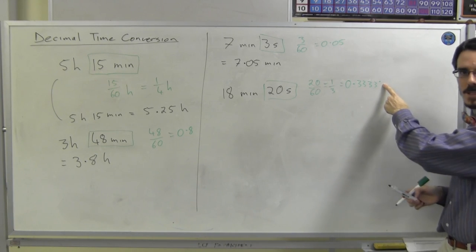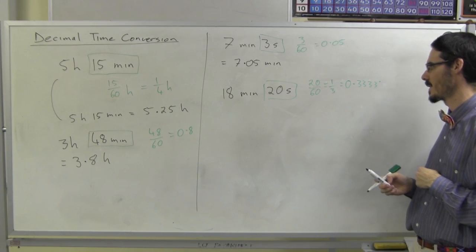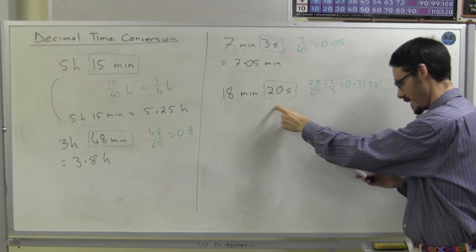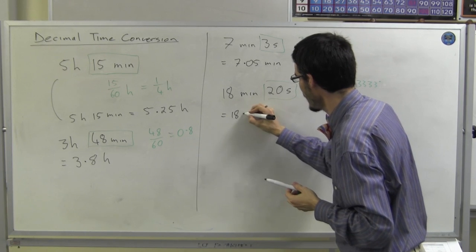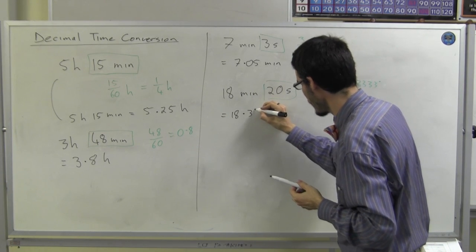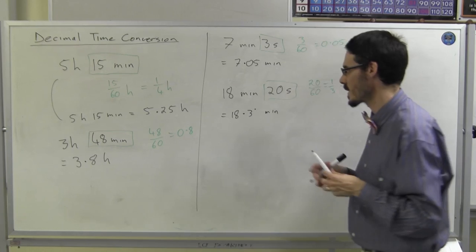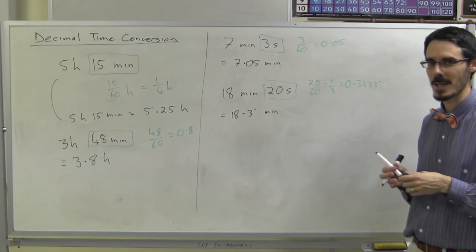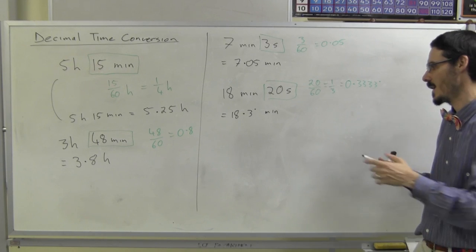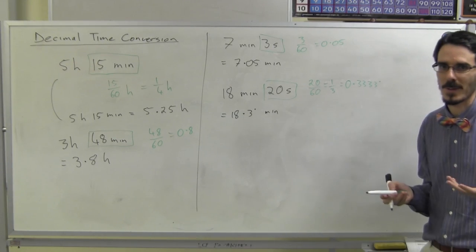That's a recurring sign. Which means this, 18 minutes, 20 seconds, is actually 18.3 recurring minutes. There's no nice way to write that. It's a recurring decimal. And you could write as many 3's as you needed for a given problem.